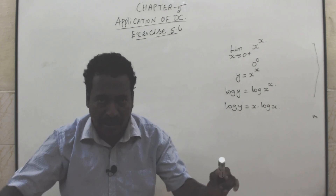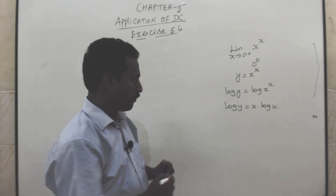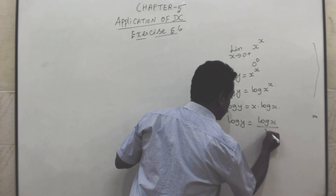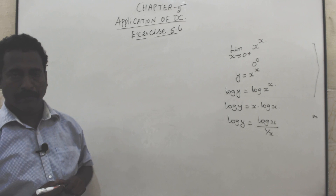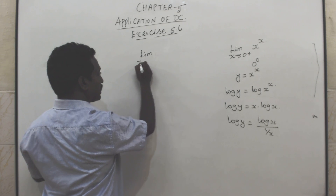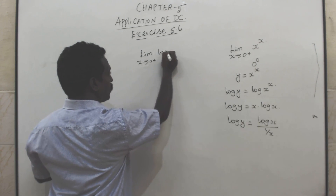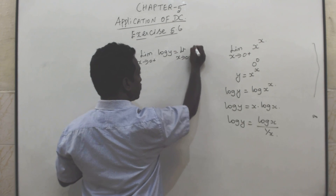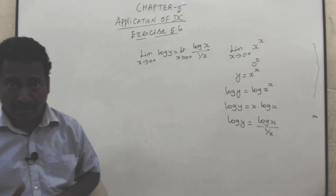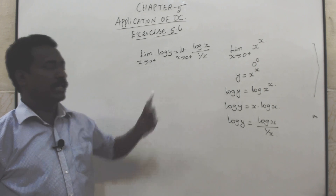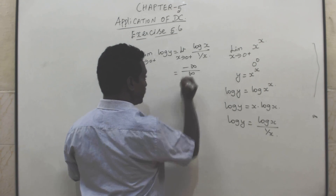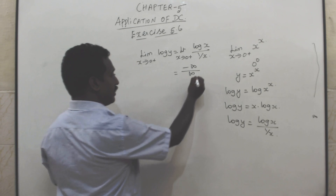Since we cannot change log x but can change only x, rewrite as log y = log x / (1/x). Taking limit x tends to 0 plus: substituting gives log x → −∞ and 1/x → ∞, so we have −∞/∞ form.